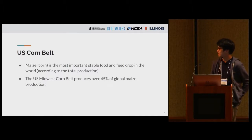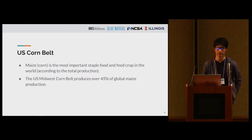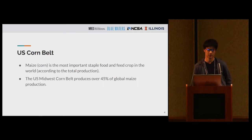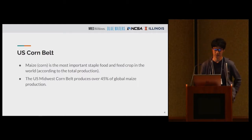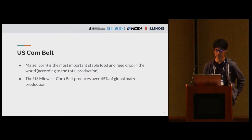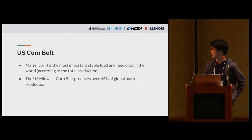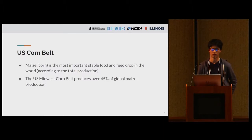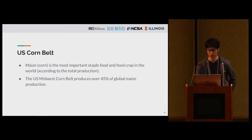The second question is why we are choosing the U.S. Corn Belt. The first reason is that corn is actually the most important staple food in terms of total production. The U.S. Midwest Corn Belt produces over 45% of global maize production, so properly understanding and modeling the U.S. Corn Belt is quite essential for global food security.